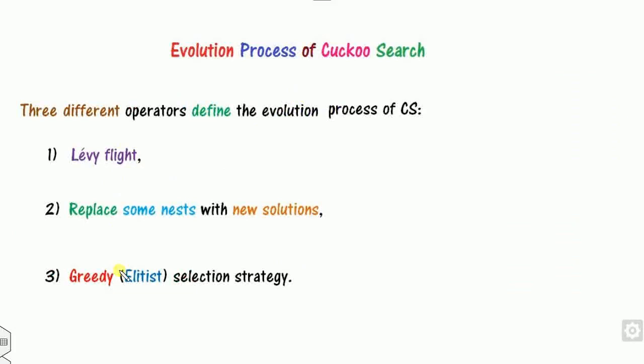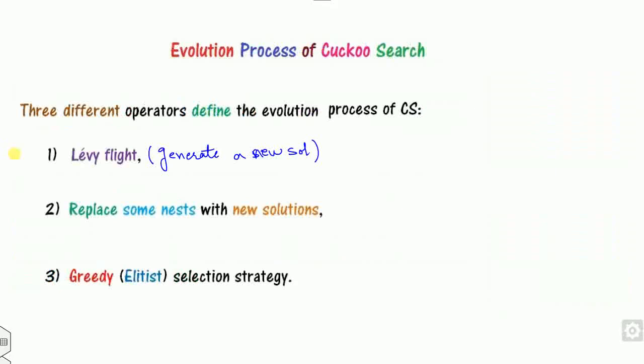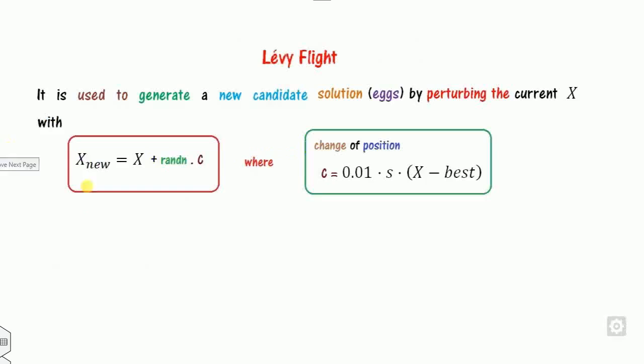The evolutionary process of the cuckoo search is basically divided into three parts. First is the Lévy flight, whose main role is to generate a new solution. Once you generate a new solution, you check whether it improves your fitness value or not, then replace some nests with the new solution — either throwing or abandoning the old one. Finally, we preserve the best value until our stopping goal is met.